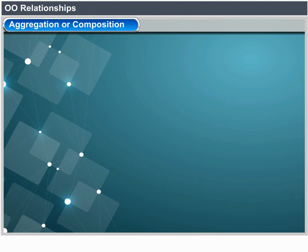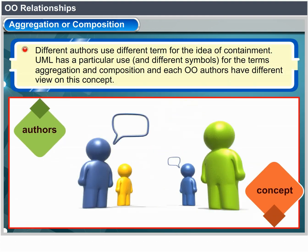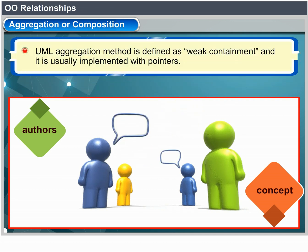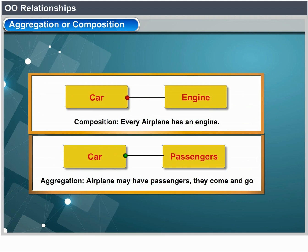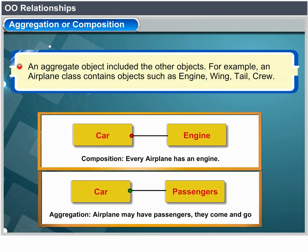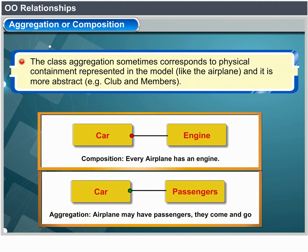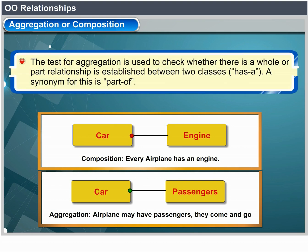Aggregation, also known as composition: different authors use different terms for the idea of containment. UML has specific uses and symbols — UML aggregation is weak containment, usually implemented with pointers, symbolized by an open diamond; composition is strong containment, implemented by value, symbolized by a filled diamond. For example, every airplane has an engine (composition), while an airplane may have passengers that come and go (aggregation). An aggregate object contains other objects — an airplane class contains engine, wing, tail, and crew objects. The test for aggregation is whether there is a whole-part relationship between two classes.